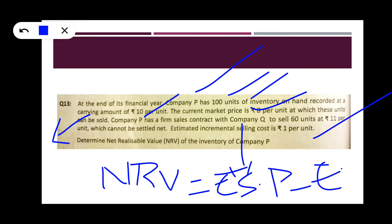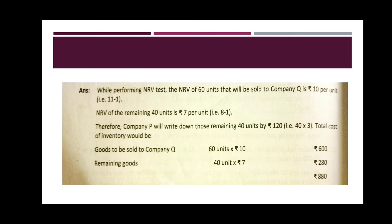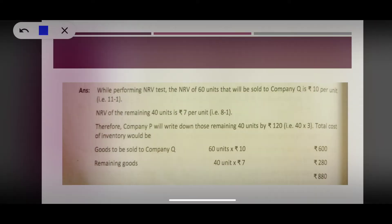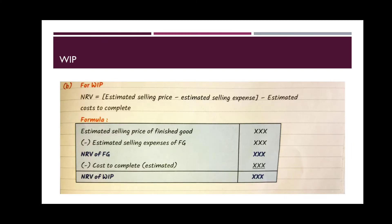NRV = Estimated Selling Price minus Estimated Selling Expenses. For the 60 units under contract, the estimated selling price is 11 rupees, minus selling expenses of 1 rupee = NRV of 10. For the remaining 40 units with no agreement, the market price is 8 minus 1 = NRV of 7. So total inventory value: 60 units × 10 + 40 units × 7.